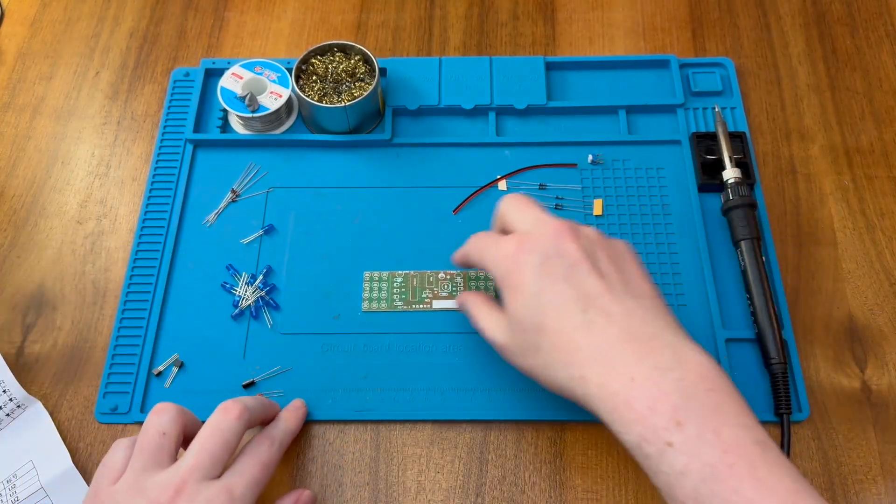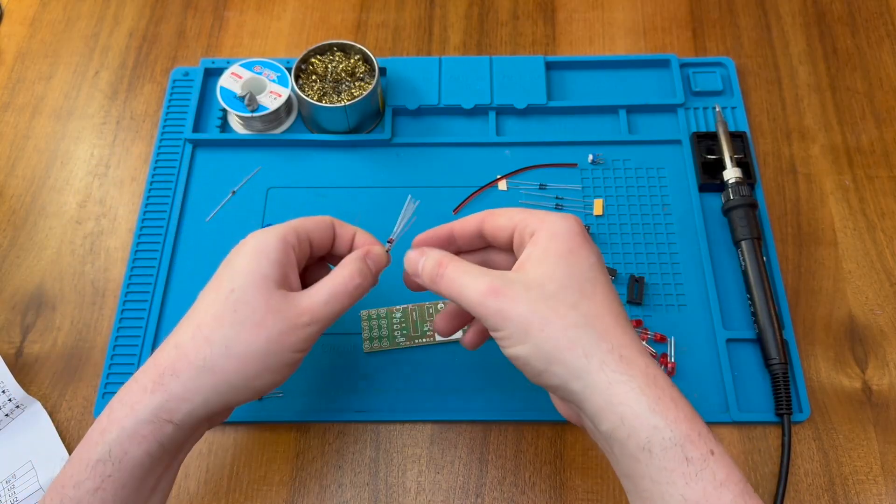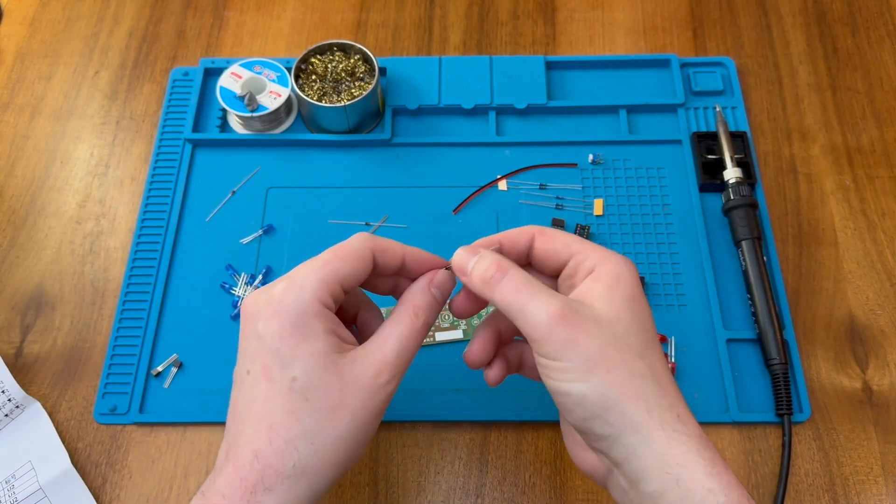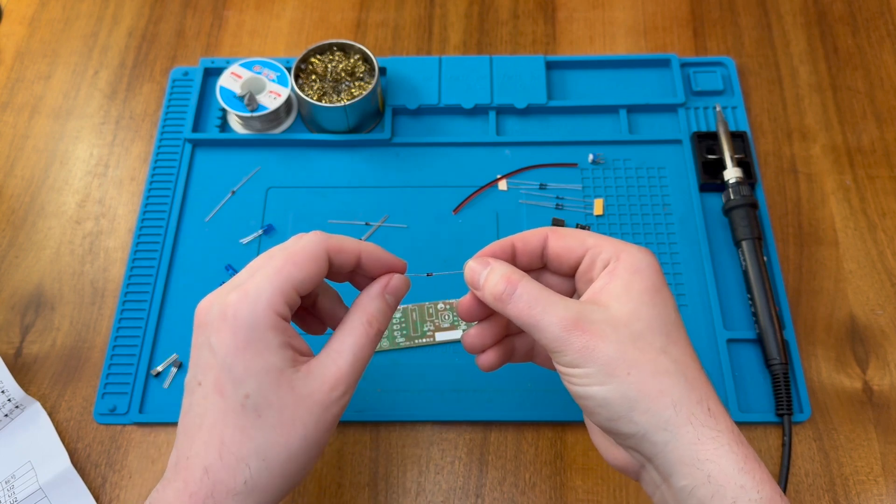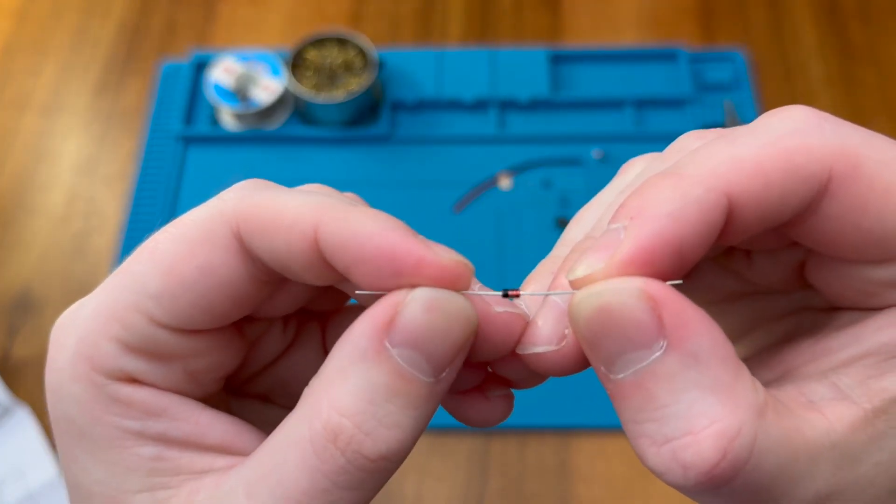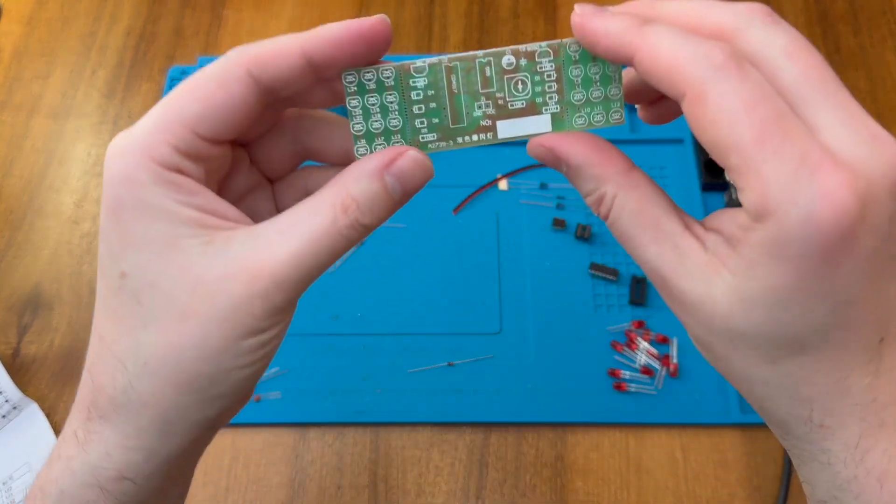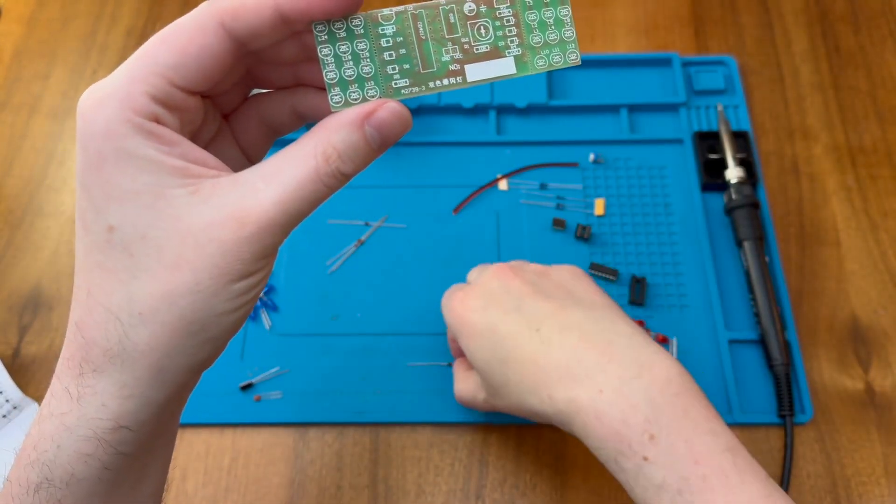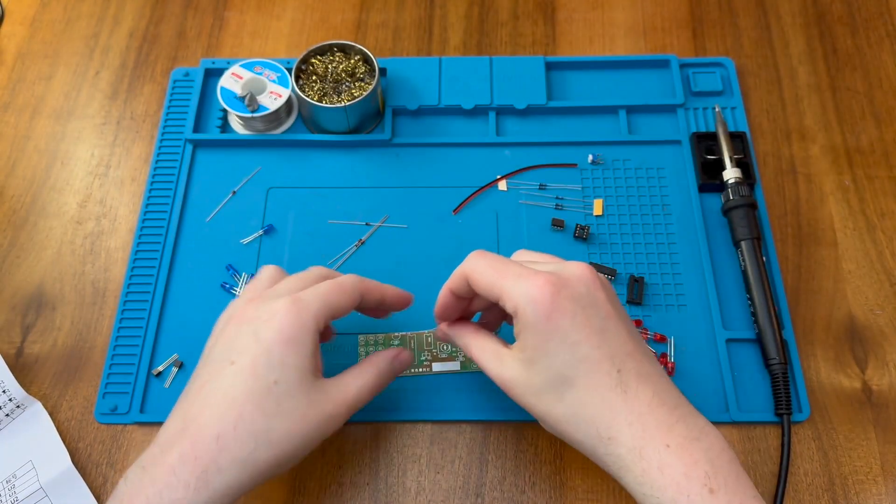As usual, we'll start with the lowest components, and in this case, I think they're probably the diodes. These are very compact diodes here, and apparently these are IN4148 diodes. If I look very carefully on here, I can confirm that is indeed what is printed on them. With the diodes, we just need to make sure that the band matches the black band on the diode when we insert them into the board.